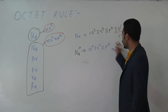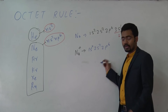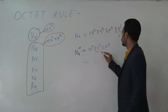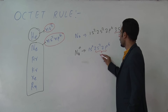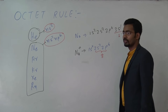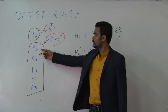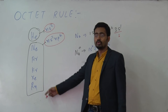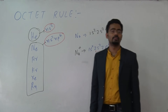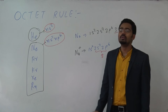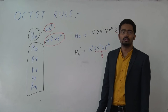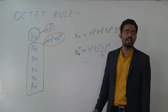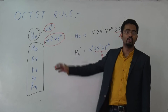There is no third shell now. The valence electrons of Na⁺ are eight, similar to neon's configuration. So generally, metals lose their electrons to gain stability, or to gain a stable configuration like a noble gas.